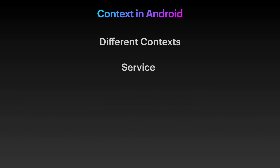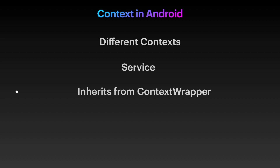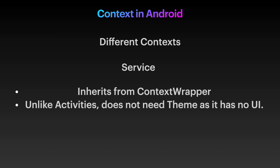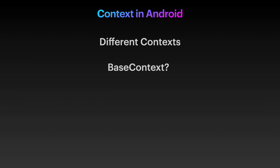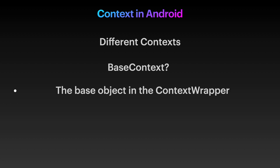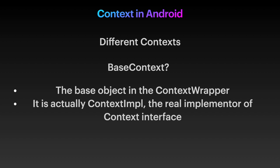Service inherits from ContextWrapper and can also use the 'this' keyword. But unlike Activity, a Service has no user interface, so it does not need a theme. Finally, what is base context? You've probably seen the method getBaseContext() when you are within an activity. This is actually the base object in the ContextWrapper — that is ContextImpl, which is also the real implementation of the context interface.